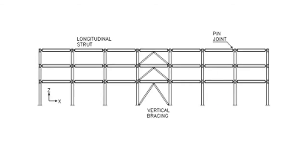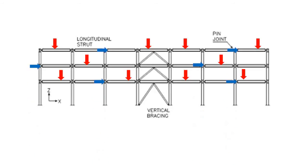Consider this particular longitudinal frame of a pipe rack. Here you can see that we have used a braced frame at the middle of this rack. There are lots of vertical loads coming to this frame, and all of these vertical loads have been placed on the longitudinal strut. In association with these vertical loads, we also have some lateral loads acting on it.